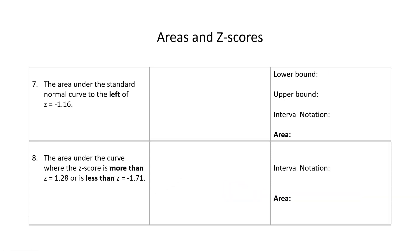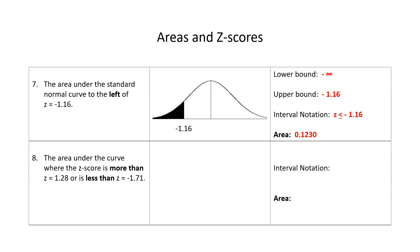Number 7: find the area to the left of z equals negative 1.16. Using Table 5, you should get an area of 0.1230.